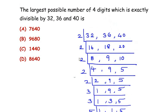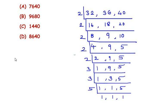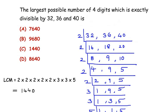Now to find out the lowest common multiple, we are going to multiply all these factors together. The lowest common multiple is equal to the product of all these factors. After multiplying, we get a value of 1440. Now this is the lowest common multiple which is divisible by all these three numbers: 32, 36, and 40. Now we have to find out the largest possible number.